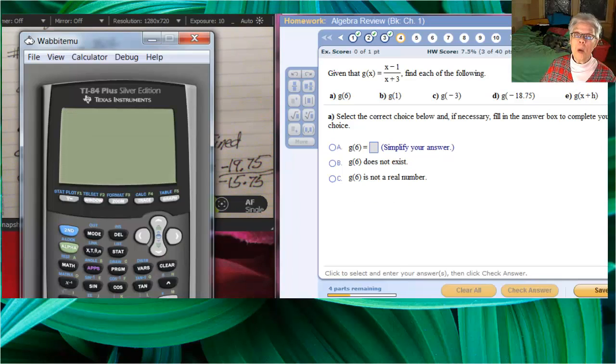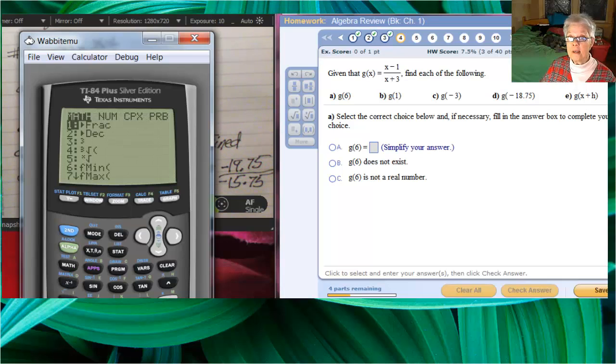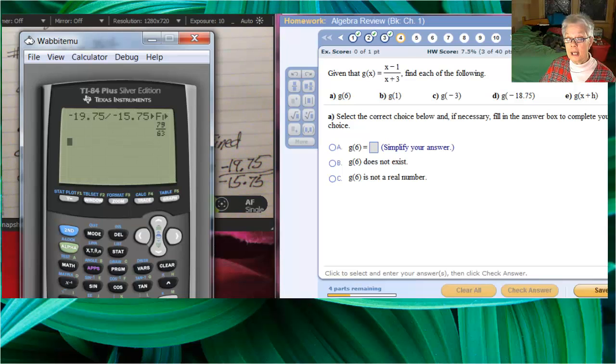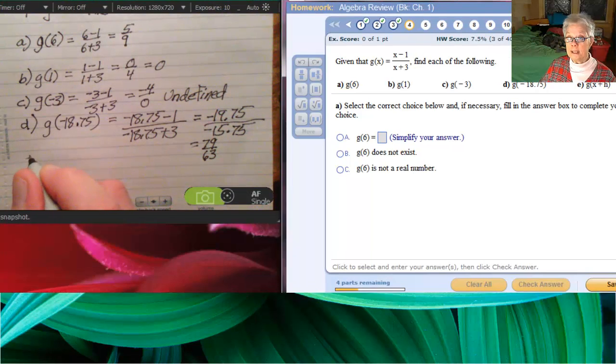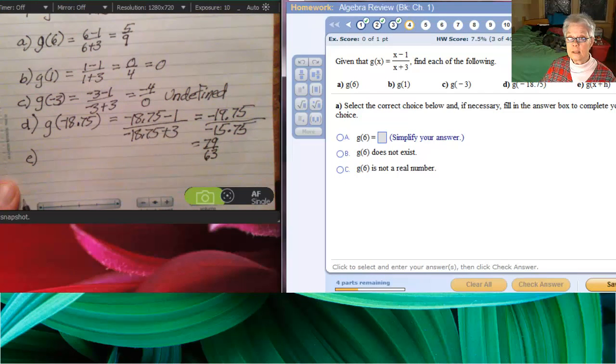This is the free Wabbit Moot calculator, and there's a link in your blackboard. So, we'll say negative 19.75 divided by negative 15.75. And the answer is, well, I'm going to math frac this. There we go, math, enter, enter. And our answer is 79 over 63.